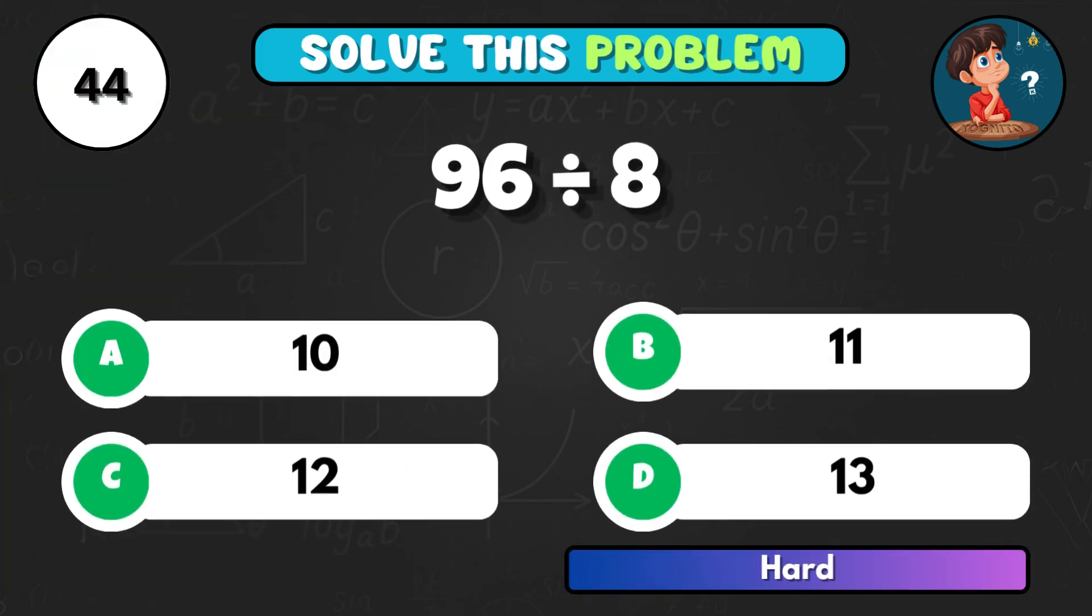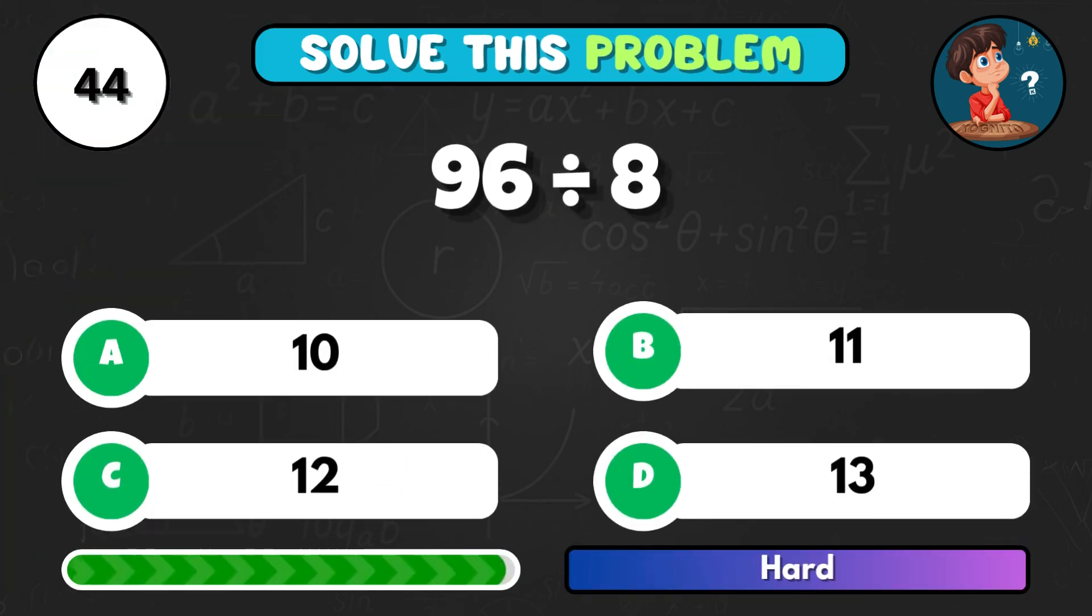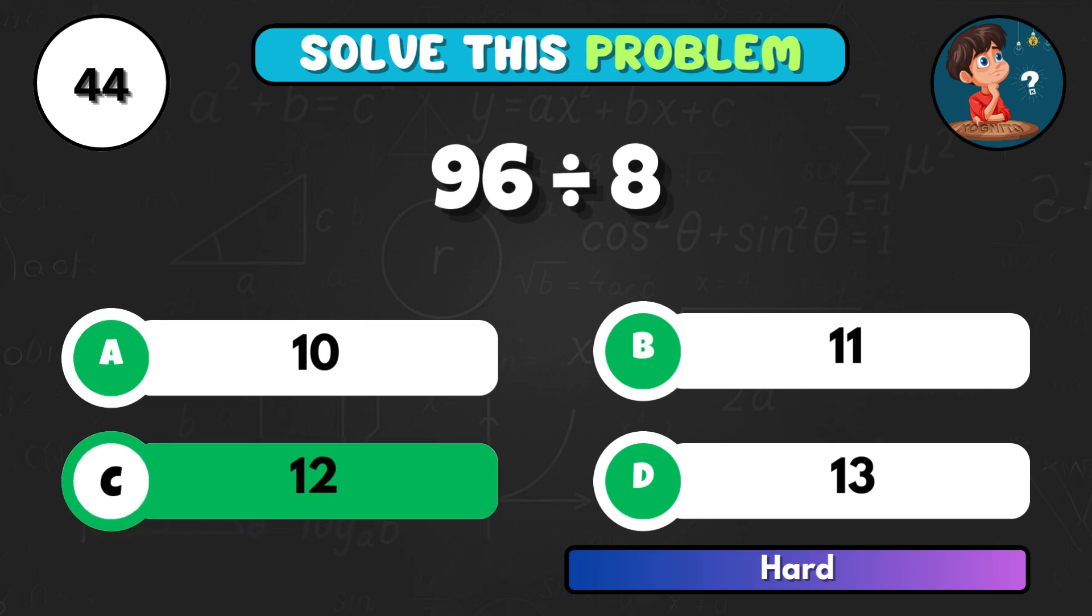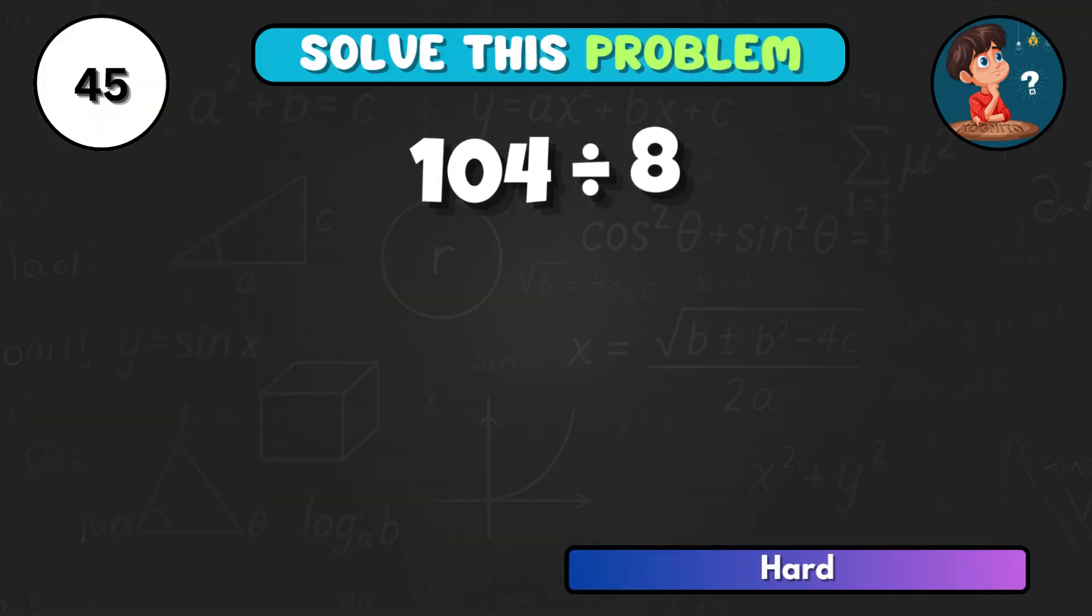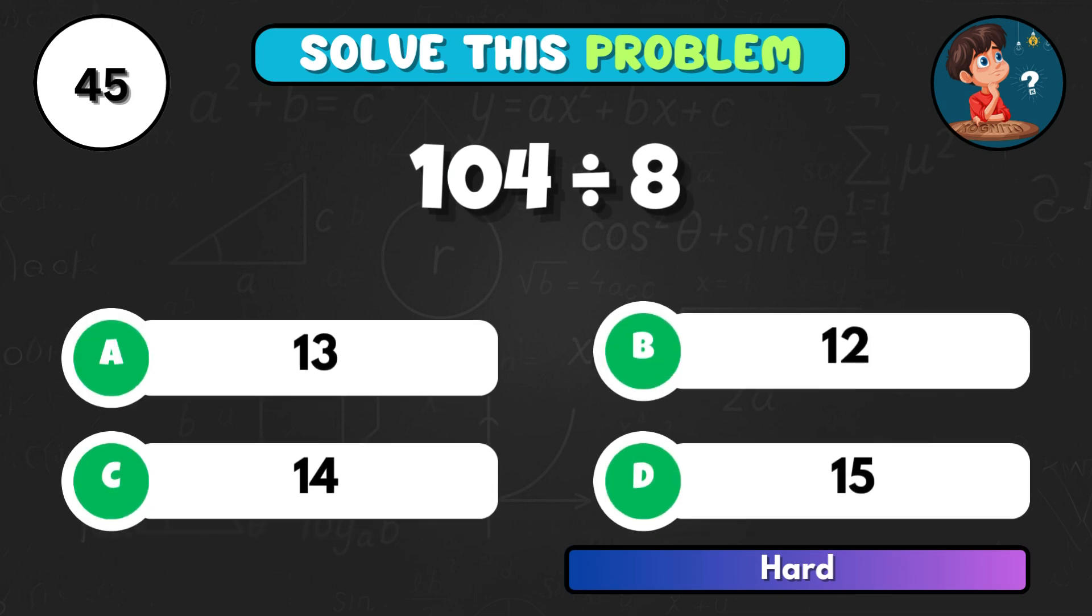Now 96 divided by 8, what's the quotient? That's C equals 12. 104 divided by 8, what's the result? Option A giving 13.